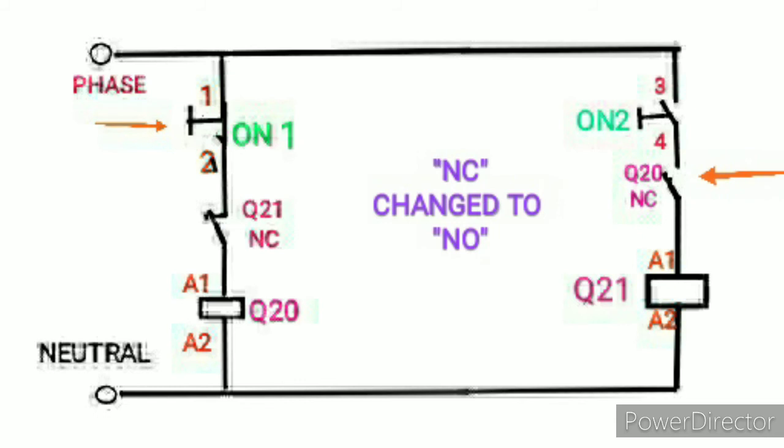So the auxiliary contact of Q20 also changed. Now see that NC changed to NO. So the contactor Q21 is not possible to operate because that interlock got opened. The NC is changed to NO.